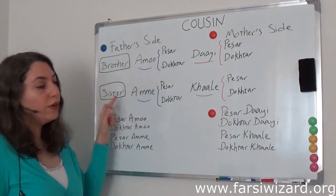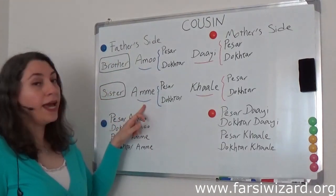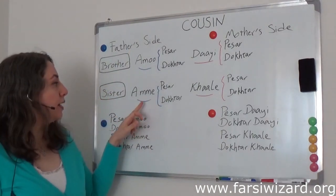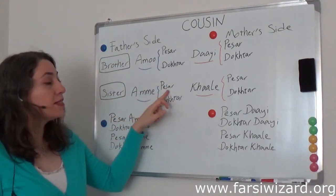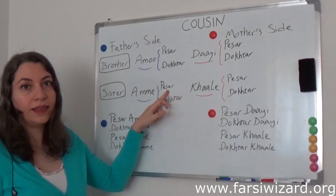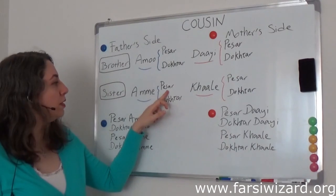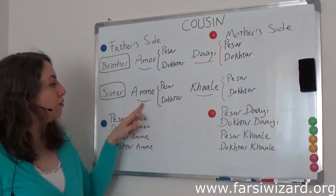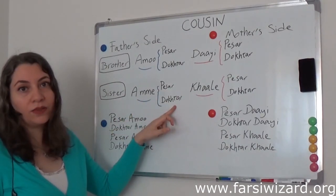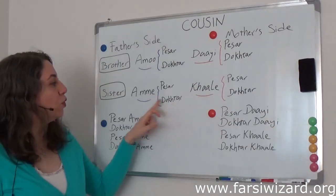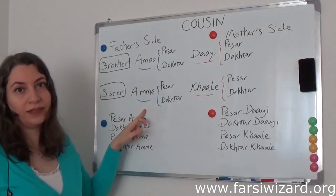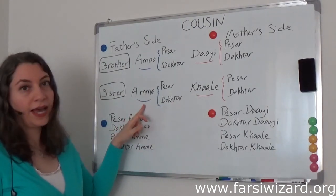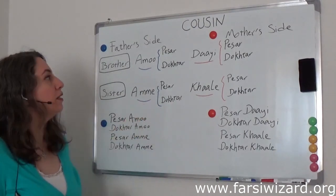For the sister of your father, the paternal aunt, the word is 'amme.' Now if your amme has a son, that cousin will be 'pesar amme.' If your amme has a daughter, that cousin will be 'dokhtar amme' — daughter of aunt, basically.